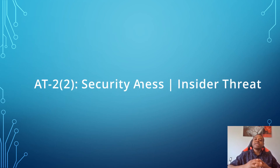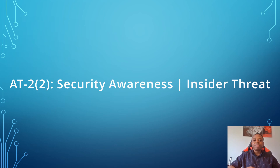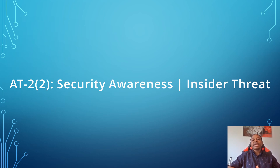We're looking at another control, AT2 subset 2, which covers security awareness on insider threats. This control ensures that the organization includes security awareness training on recognizing and reporting potential indicators of insider threats. Evidence we can request includes a copy of the insider threats briefing PowerPoint, certificates of completion for insider threats training, and user attestation for reading the insider threats briefing.